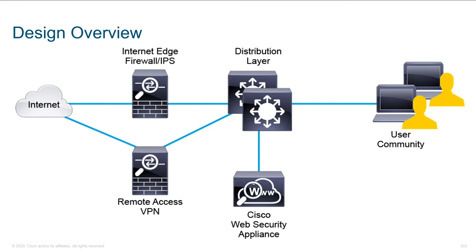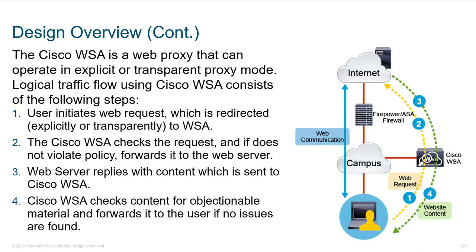Here we see a design overview. You could be using a dedicated ASA running classic ASA code for remote access VPN, and then have a separate pair or cluster of firewalls running Firepower. Within the organization, using existing switches and routers, we can identify particular traffic flows and say: for our web traffic, we want it analyzed by the WSA over here. And if you want to go a step further with email traffic, you could leverage an ESA.